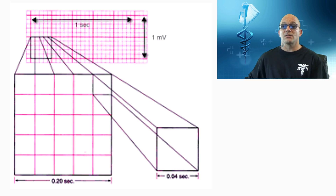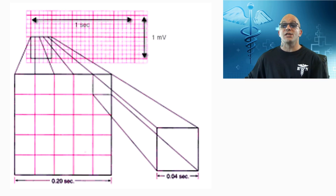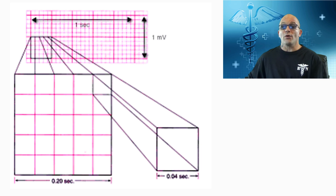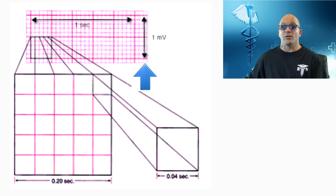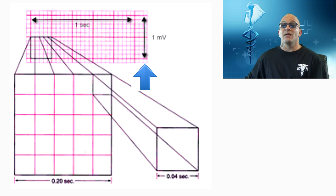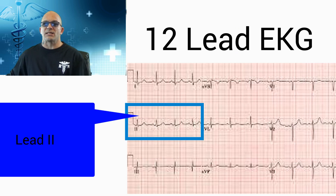Within the large blocks are five smaller blocks, each representing 0.04 seconds. The vertical axis records EKG amplitude or voltage. Two large blocks equal one millivolt and each small block within equals 0.1 millivolts. We shall now break down the waves on a normal EKG. These tracings consist of waveform components that indicate electrical events during one heartbeat. The waveforms are labeled P, Q, R, S, T, and sometimes U. We will be discussing lead two, which is the standard lead out of a 12-lead EKG.